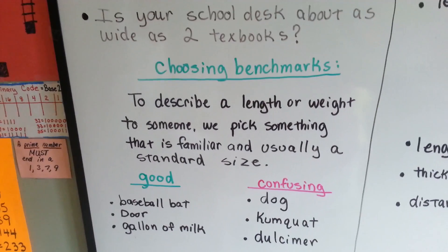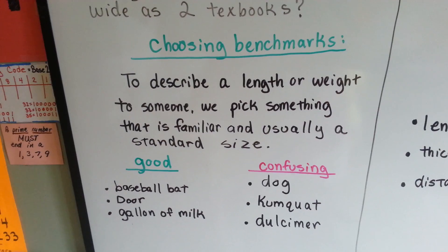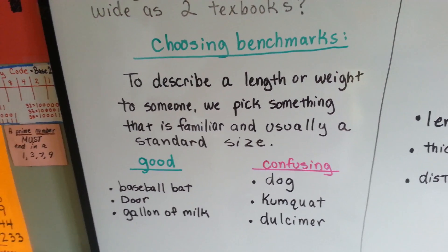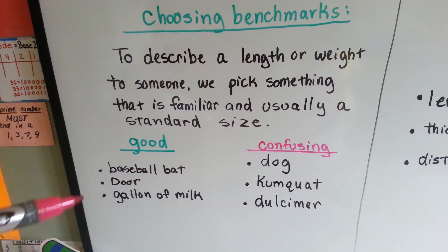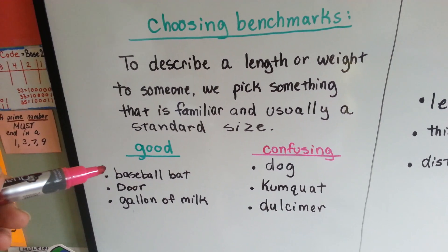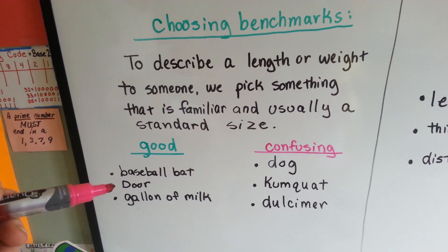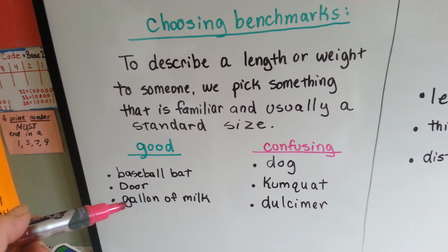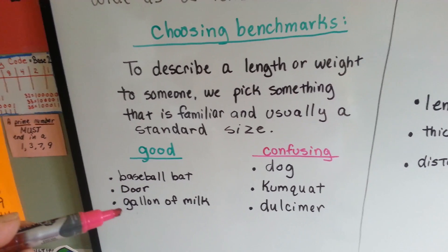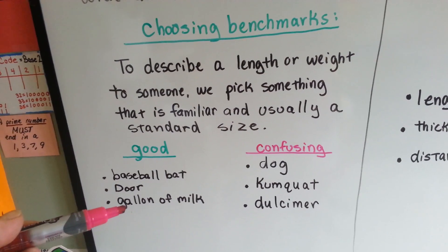So choosing benchmarks to describe a length or weight to someone, we pick something that is familiar, and usually a standard size. A good benchmark would be a baseball bat, because everybody's seen a baseball bat, or the width or height of a door, or a gallon of milk. Say, I drank so much water, it was like a whole gallon of milk.